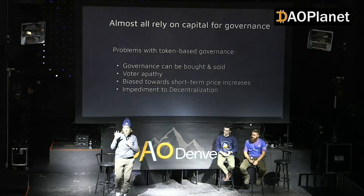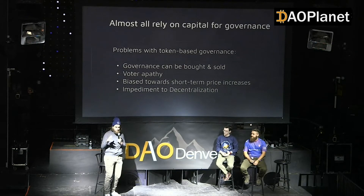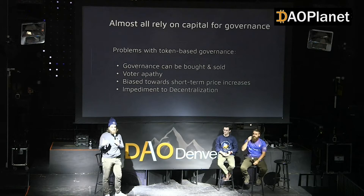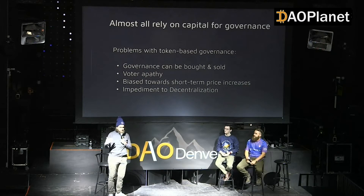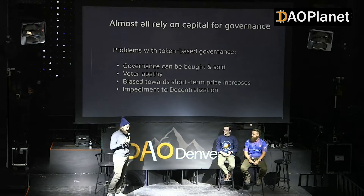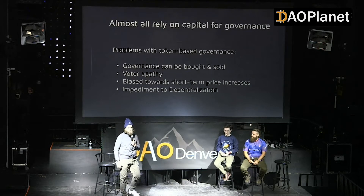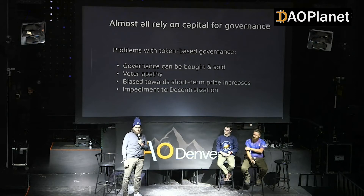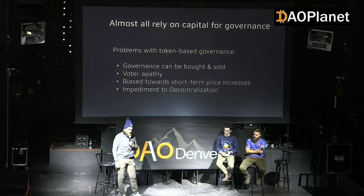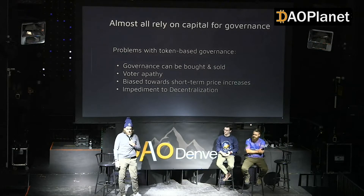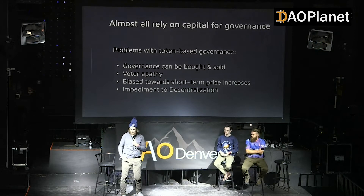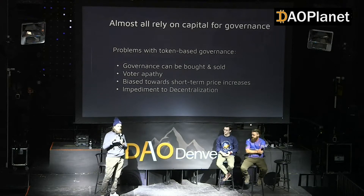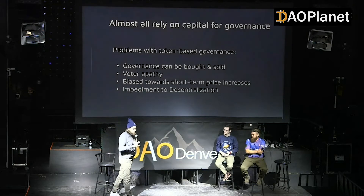All of these forms of governance rely on capital. When determining who has a say in the DAO, it's about who has the most tokens — and often that's the investors and VCs that launched the projects. This has created problems: governance can be bought and sold, most token holders are speculators not interested in voting, and governance will quickly go toward just trying to pump the token price.